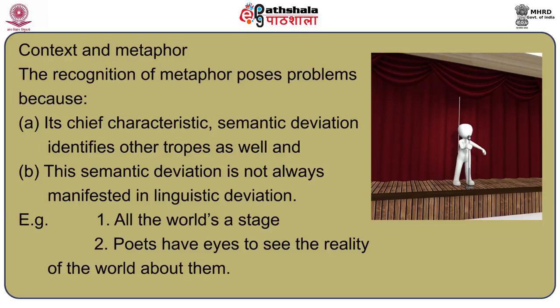Let us look at context and the metaphor. The recognition of metaphor poses a problem because its chief characteristic — semantic deviation — identifies other tropes as well. And second, this semantic deviation is not always manifested in linguistic deviation. Take the example 'all the world's a stage.' There are several ways it can be identified as a metaphor. One, it shows semantic deviation and is therefore ungrammatical. But this is true of many other tropes. Second, the statement is logically absurd and meaningless on the literal level, and therefore its meaning has to be sought at the figurative level — but again, this is true for many tropes.